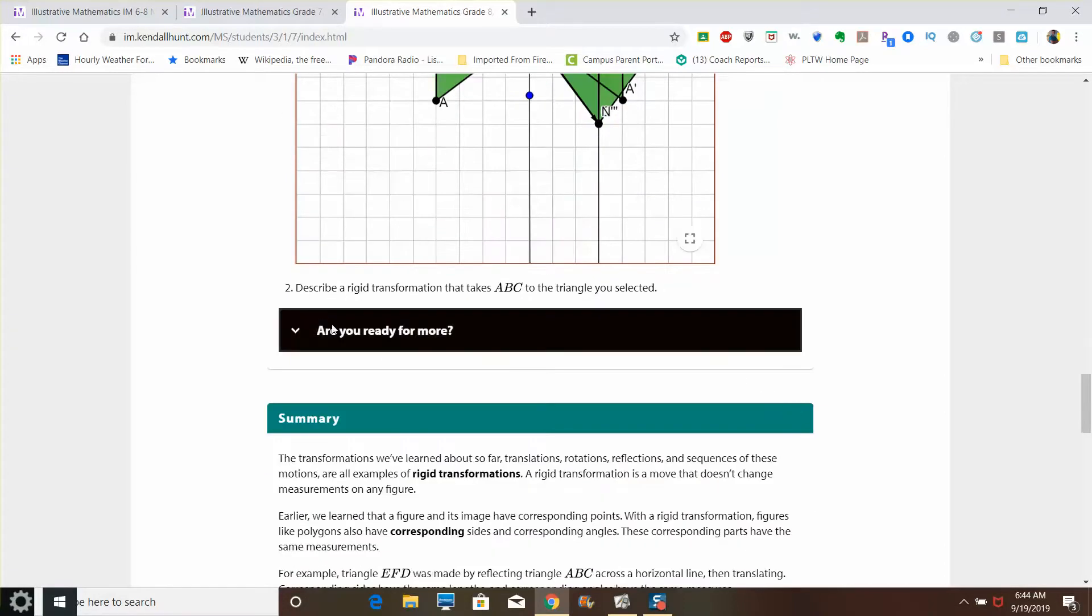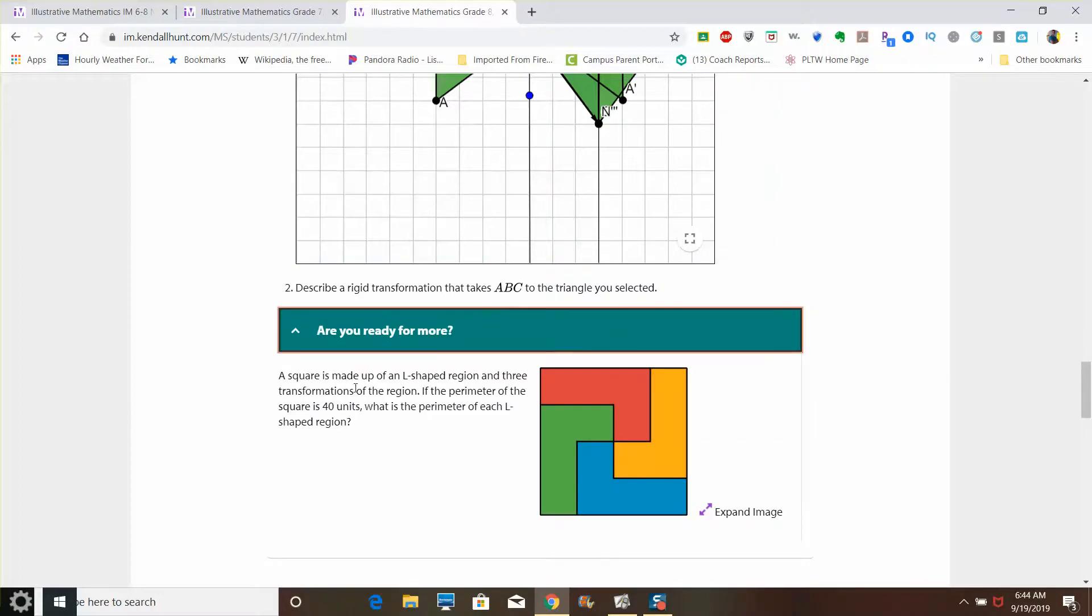There is also a question on your screen, on your paper packet as well, that talks about, are you ready for more? And I just want to point out here that it is a square, and squares have equal side lengths on all sides. So just to keep that in mind, that's your hint for that question.